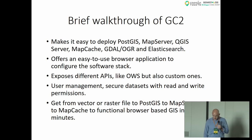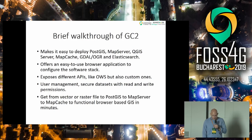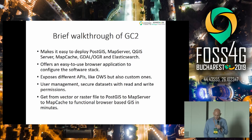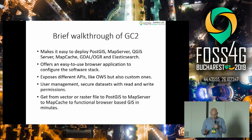GC2 can be described as an easy way to deploy PostGIS, MapServer, QGIS Server, MapCache, GDAL, OGR, and Elasticsearch. GC2 offers an easy way to configure the whole software stack — no need to write configuration files or use a terminal. Everything is done through a web browser. Out of the box, all PostGIS tables and views are exposed in a number of APIs like WMS, WFS, and more. This means you can get a shape file from your PC to a PostGIS database and a MapServer map in a couple of minutes.